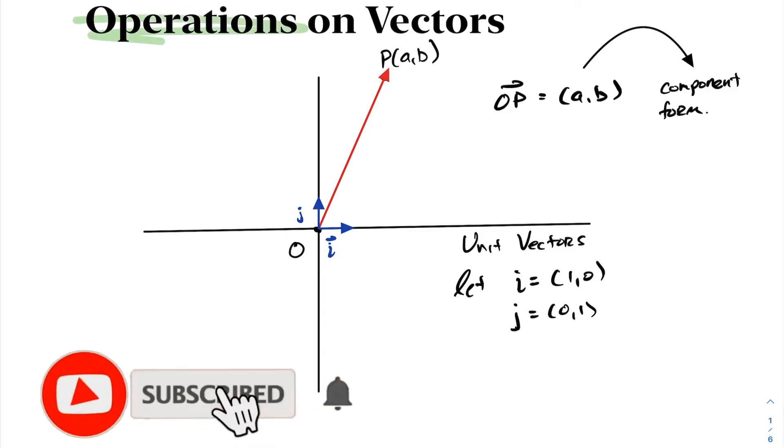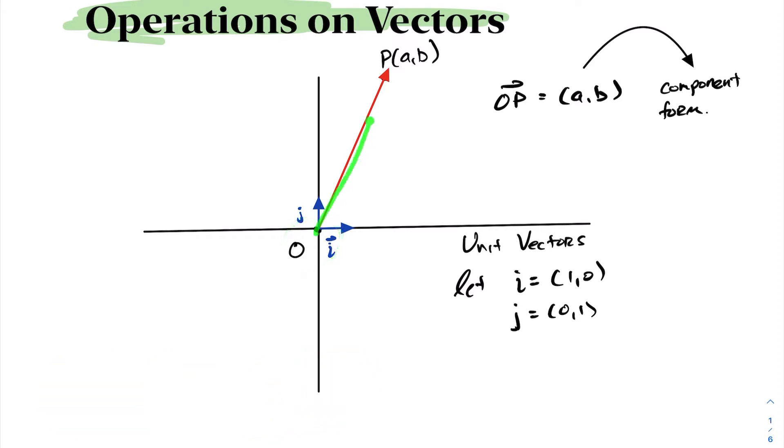In today's lesson, we're going to be talking about operations on vectors. Suppose here we have a vector starting at the origin and goes to a point A,B. Let's label that point P.